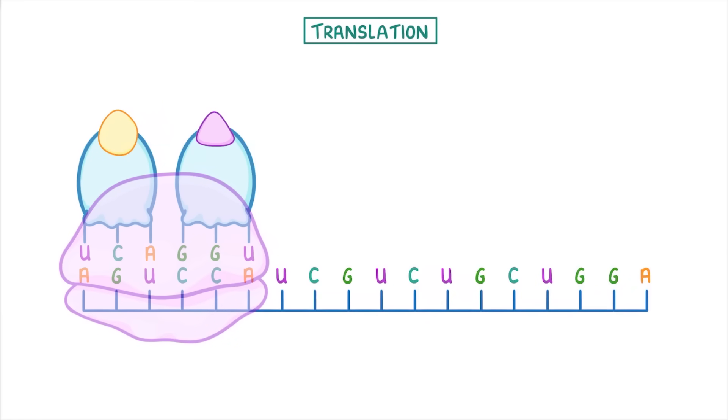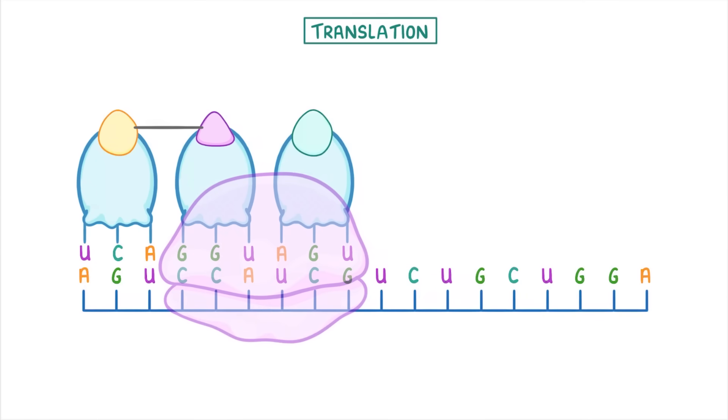Now, the whole point of this seemingly complex process is that the tRNAs have now brought the correct amino acids down to the ribosome in the correct order. So the ribosome is able to join them together and start building up a chain of amino acids. Once it's joined these first two amino acids together, the ribosome moves along the mRNA slightly. And so another tRNA molecule will come down and bind to its complementary codon on the mRNA, bringing with it the next amino acid. This allows the first tRNA molecule to detach and repeat the process.